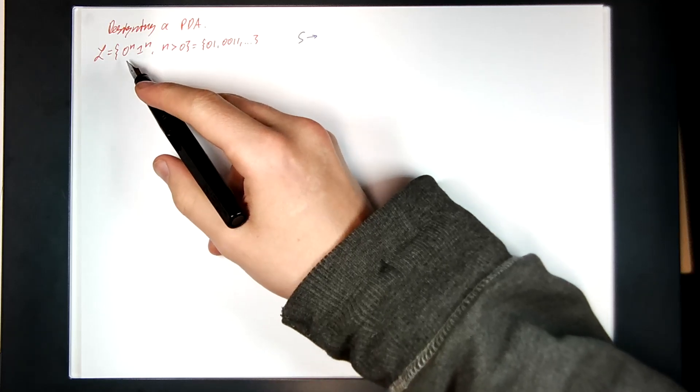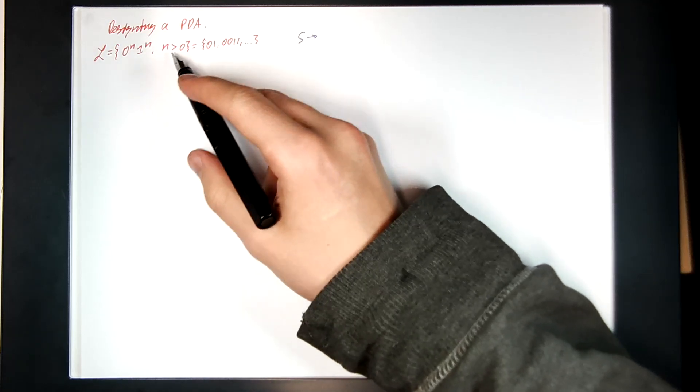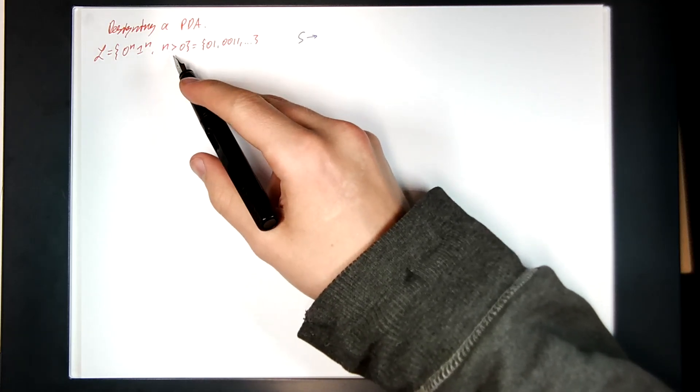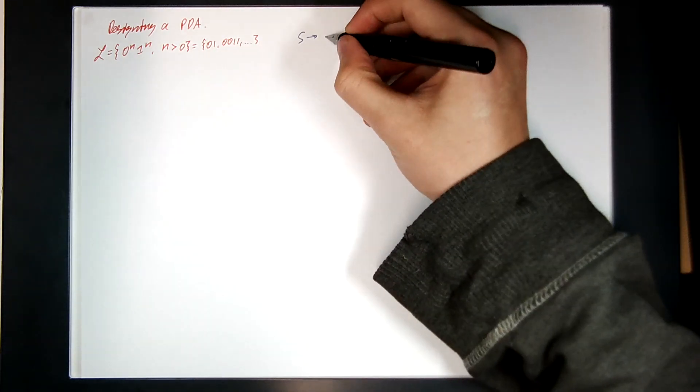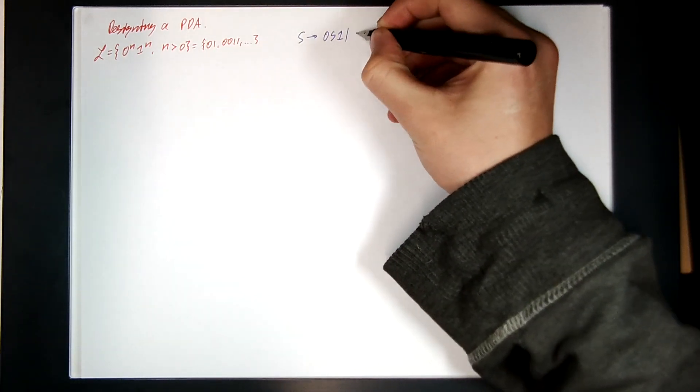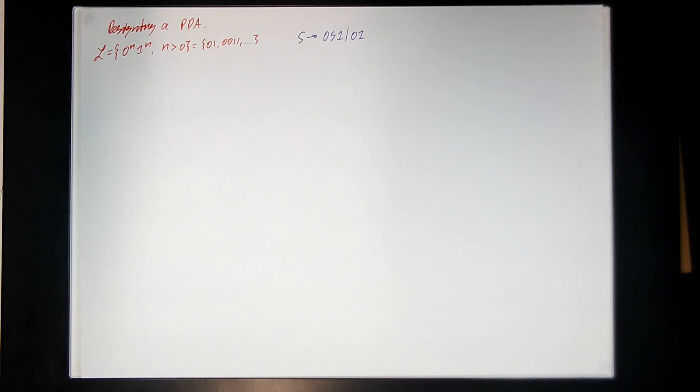So what would this one be? So 0 to the n, 1 to the n, and n is strictly greater than 0. So it looks like 0, S, 1, or 0, 1 ought to do it. Then you can just take this grammar and convert it to an NPDA using the algorithm we described before.